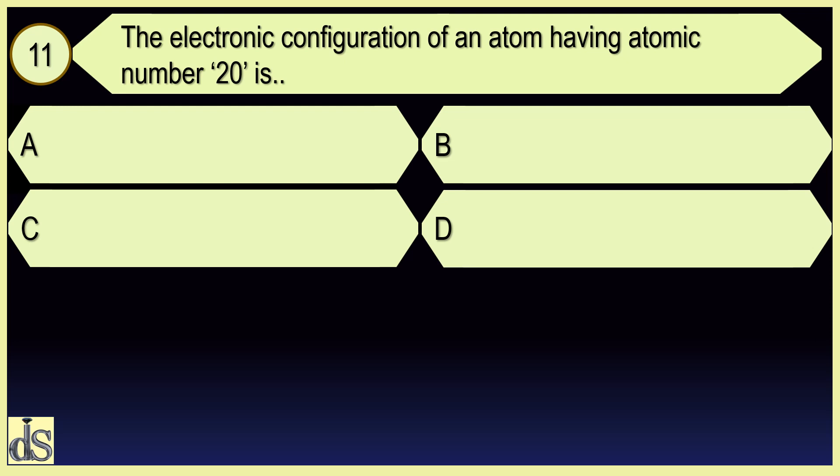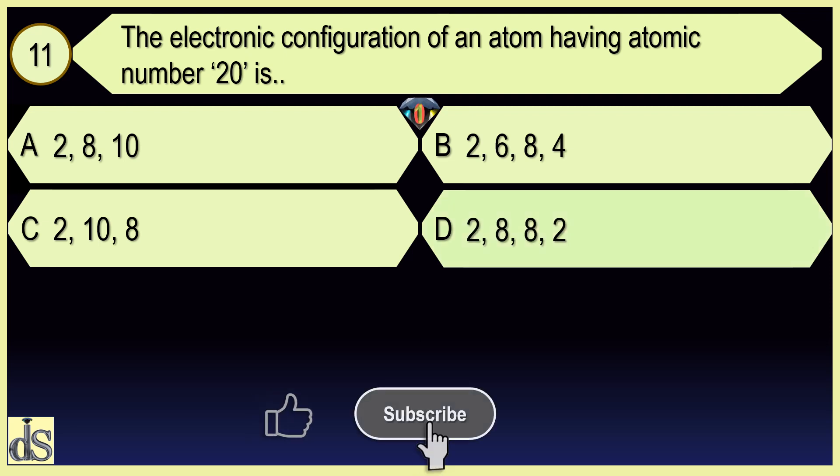The electronic configuration of an atom having atomic number 20 is 2, 8, 8, 2.